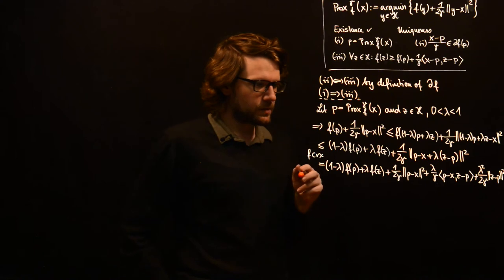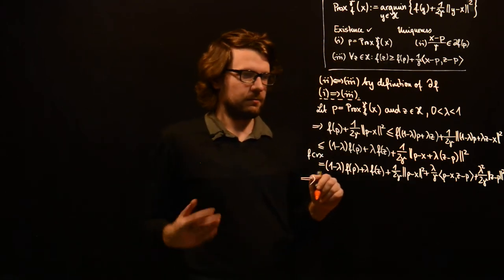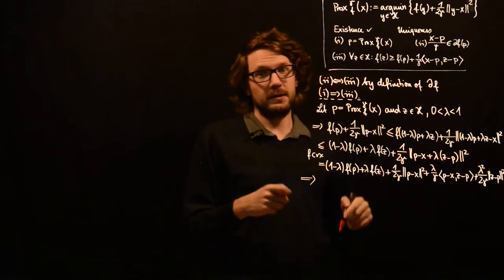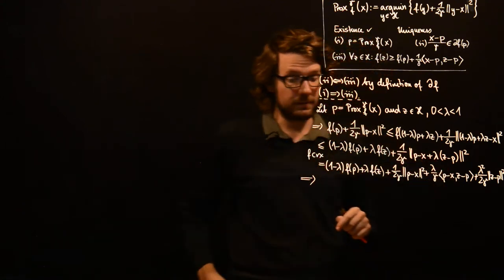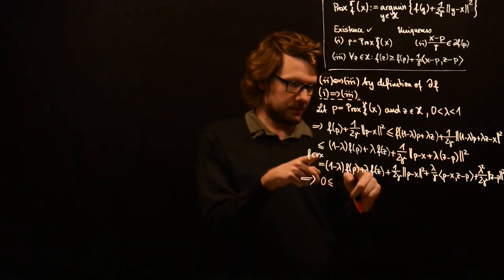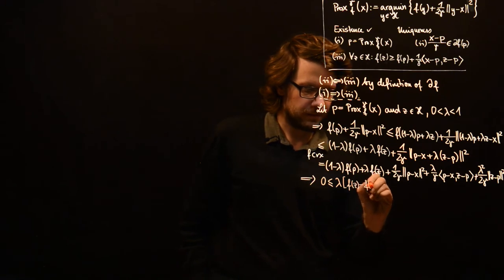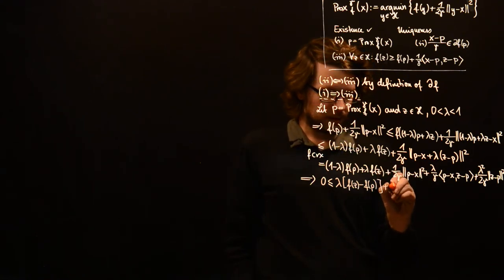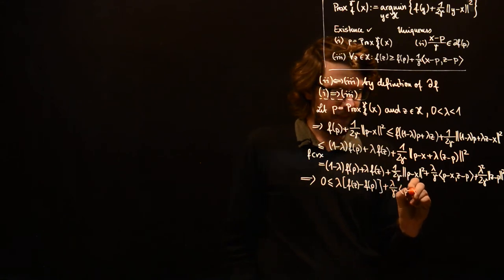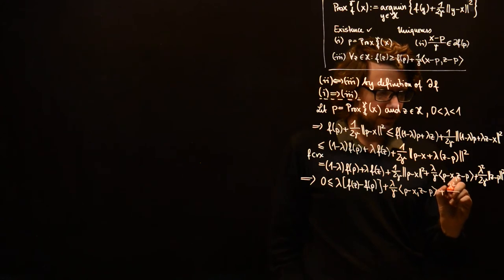Now we can subtract the left hand side from both sides. We also know that this infimum on the left hand side is finite — we showed this in the last video. So this is a real number we can subtract from both sides. We have 0 is less or equal than lambda times f of z minus f of p, plus lambda over gamma times p minus x times z minus p, plus lambda squared over 2 gamma times norm of z minus p squared.